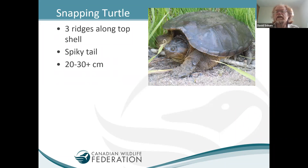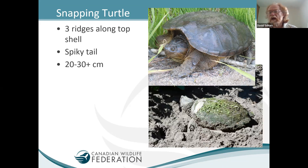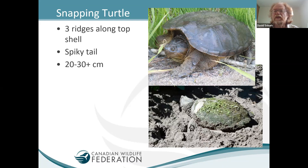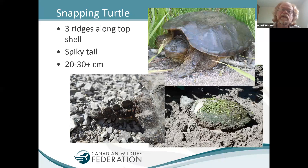We also have the mighty snapping turtle, probably our second most common species in Canada and our largest species of freshwater turtle. Sometimes you can see three ridges down the back of the shell, but the shell is often covered with algae, making it difficult to see those features. The large size and dinosaur look really helps in identifying it as a snapping turtle, as does the dinosaur-like tail with spikes — if you see that, it's definitely a snapping turtle.